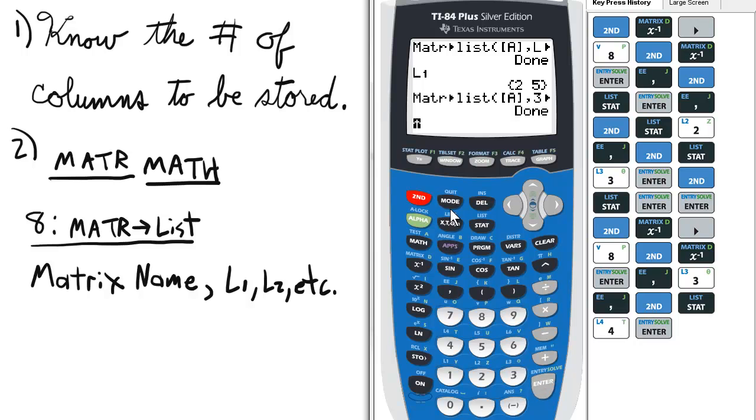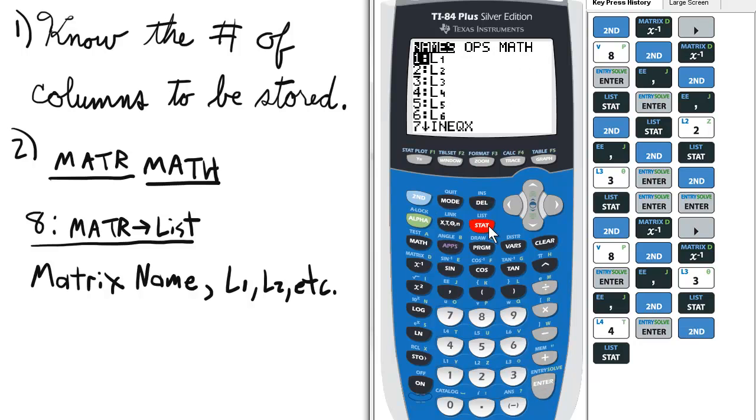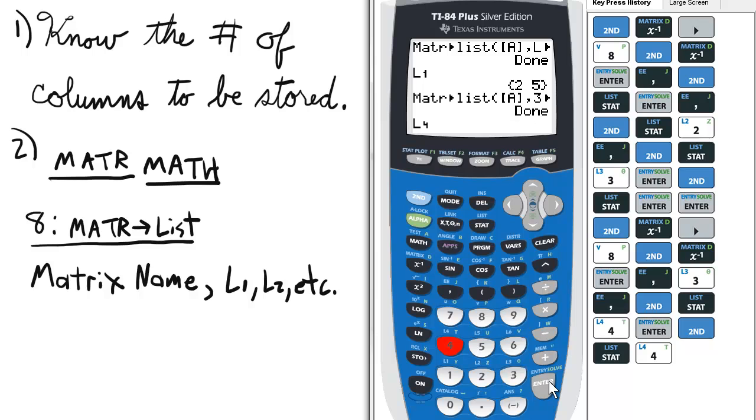So now we can check list 4, and press enter, and it's 9, 17, which is only the third column, which is awesome. So you can do a whole matrix, or you can do just one column of a matrix.